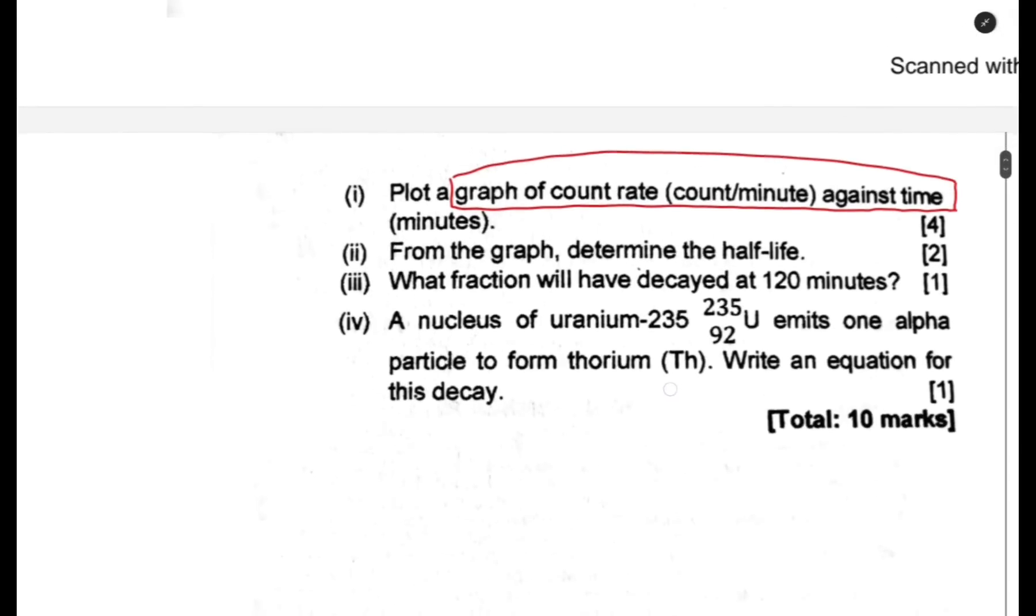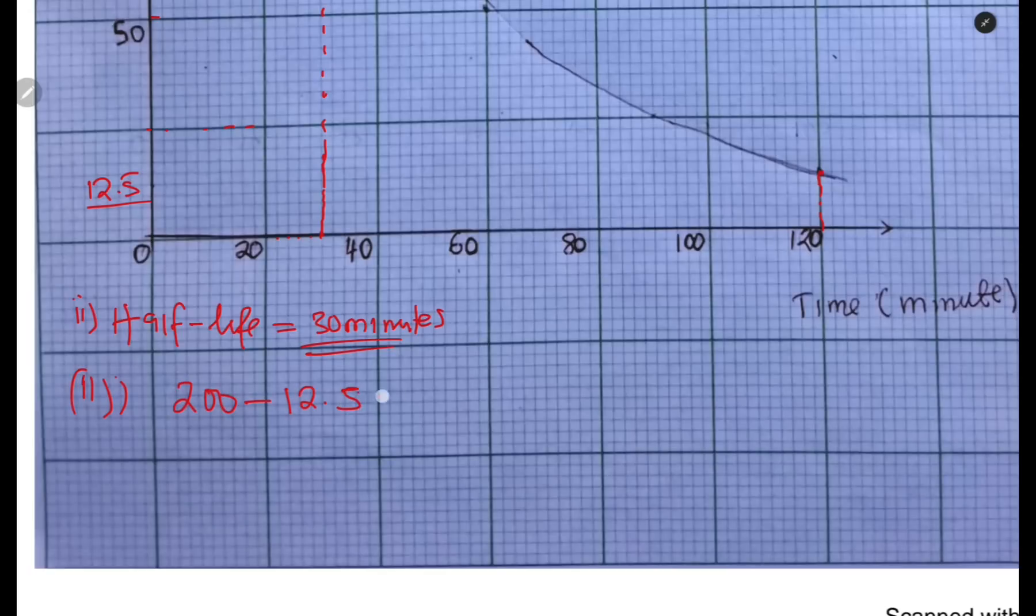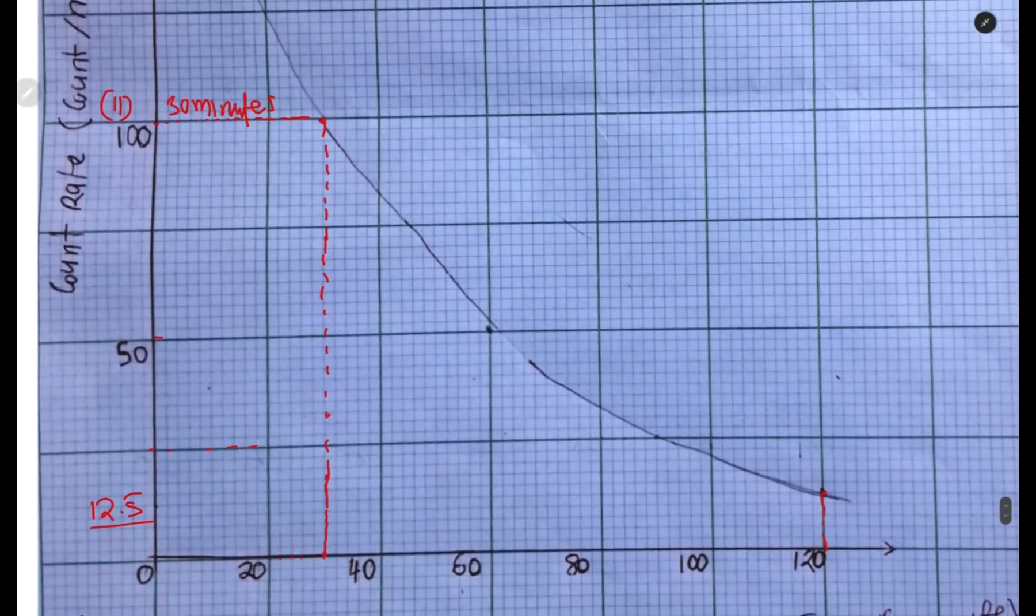The other question is: what fraction will decay at 120 minutes? We go at 120 minutes, which is this one, and 120 is at 12.5. So 12.5 is what remains. They are asking what will decay. To find what will decay, we subtract what remains. The total was 200 minus 12.5 count per minute. That is the fraction of what decays. The whole of this part has decayed, but this part has remained, which is 12.5.